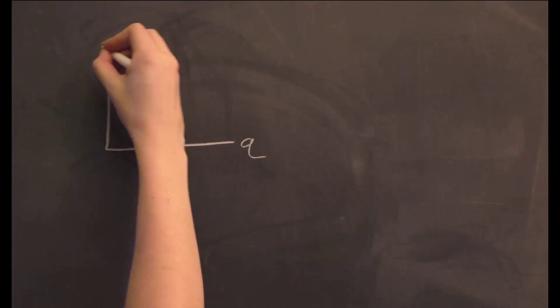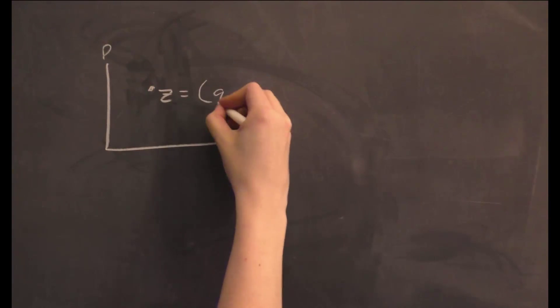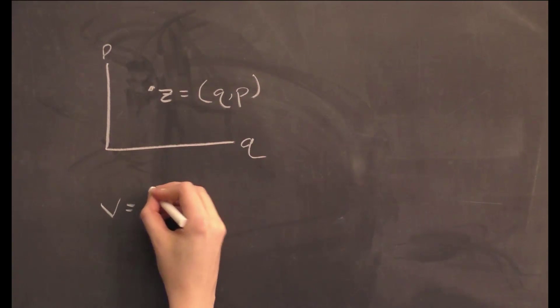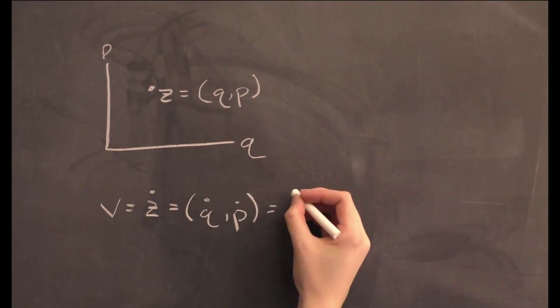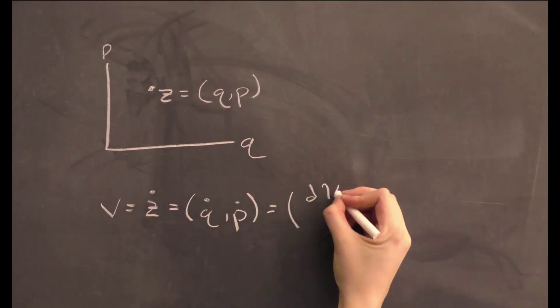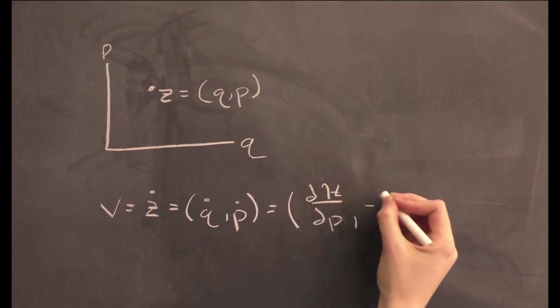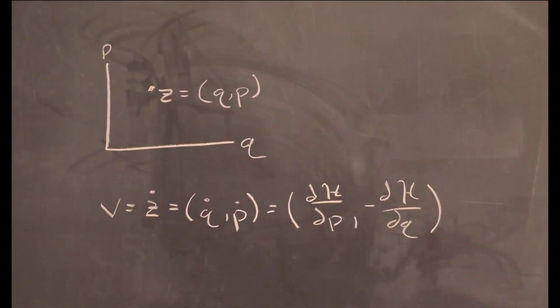With these tools, we are finally ready to prove Liouville's theorem, and it turns out to be a simple task indeed. Say we have a point z equals qp moving in phase space. The velocity of this point is z dot equals q dot p dot, which we know from the Hamiltonian equations of motion is equal to dH dP negative dH dQ.